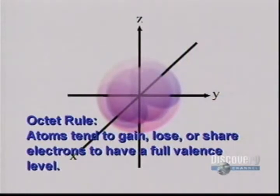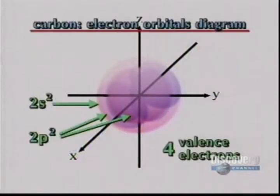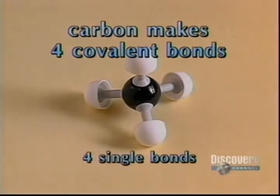Half of carbon's valence level is filled with electrons. A carbon atom usually satisfies the octet rule by sharing electrons with other atoms in covalent bonds. Single bonds share one electron from each bonded atom, double bonds share two, and triple bonds share three.